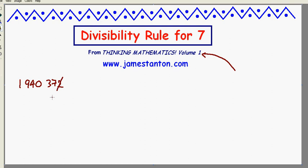The rule says delete the last digit, get rid of the 2, but double it. Double 2 is 4, and subtract that from what remains. So 194,037 minus 4 is now 194,033. And ask instead, is that a multiple of 7? I can't tell, so I'm going to use the rule again.